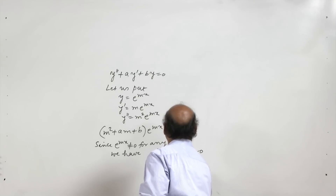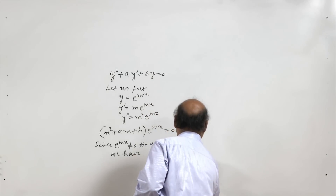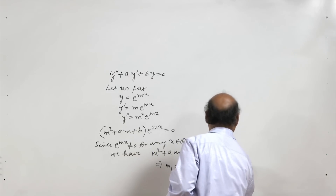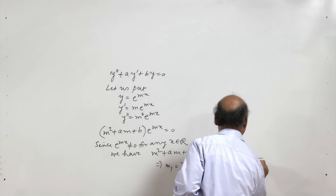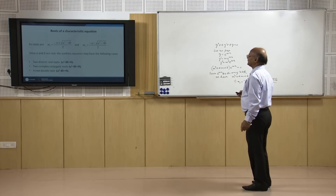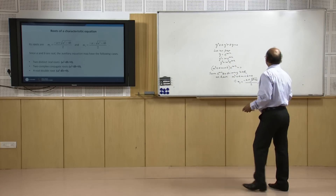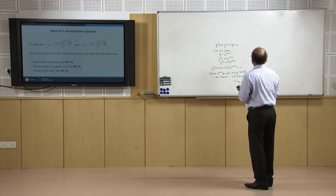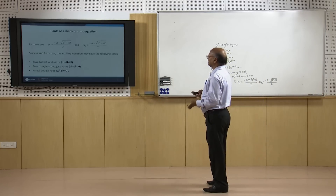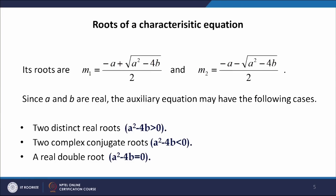The roots are m₁ = (−a + √(a²−4b))/2 and m₂ = (−a − √(a²−4b))/2. Whether m₁ and m₂ are distinct real, complex conjugate, or equal depends on the discriminant a²−4b. There are three cases: two distinct real roots if a²−4b > 0, two complex conjugate roots if a²−4b < 0, and a real double root if a²−4b = 0.